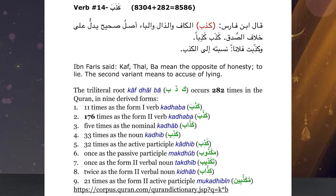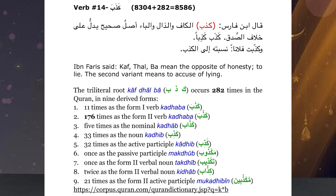Ibn Faris, rahmatullahi alayhi, tells us: al-kaaf wa al-dhal wa al-ba'u aslun sahihun yadullu ala khilafi al-sidq — kathaba, kathiba. He is telling us that these three root letters are basically the opposite of honesty and truthfulness, meaning to lie, to be false.